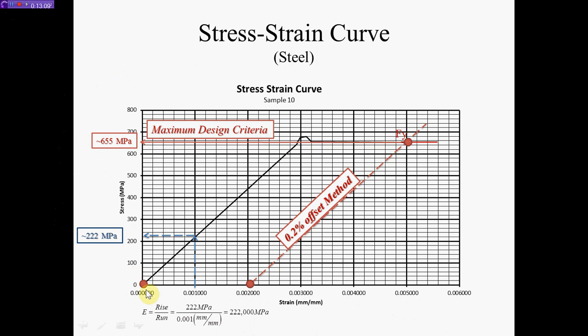Now, you have your stress and your strain — your rise, which is 222 MPa, and your run, which is 0.001. Dividing by 0.001 is just like multiplying by 1,000. So E equals rise over run: 222 MPa divided by 0.001. Strain is millimeter per millimeter — millimeter of deformation per millimeter of sample length — so those units cancel out, leaving you with 222,000 MPa. That completes what is required for this particular problem.